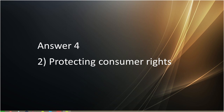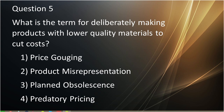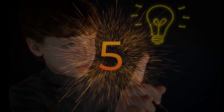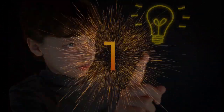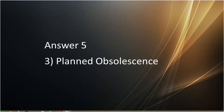Question number five: What is the term for deliberately making products with lower quality materials to cut costs? First is price gauging. Second is product misrepresentation. Third is planned obeisance. Fourth is predatory pricing. Answer to question number five is planned obeisance.